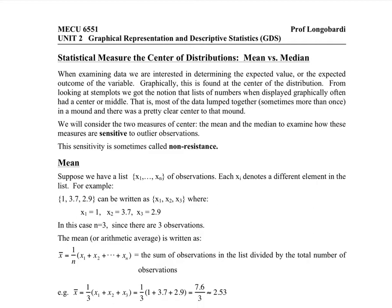The observations are denoted by x subscript 1, which is 1, x subscript 2, which is 3.7, and x subscript 3, which is 2.9, for a total of 3 observations, n equals 3.